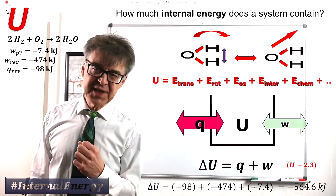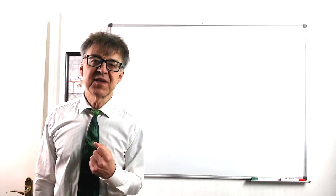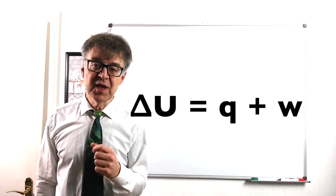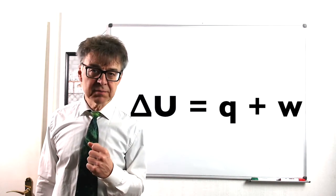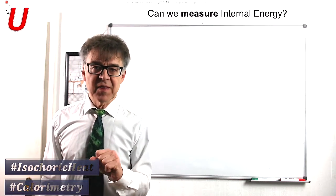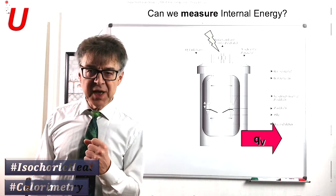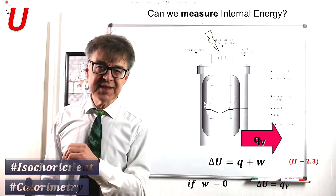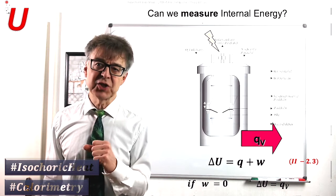Calculating delta u is particularly easy if the work is zero. And this is the case if the volume remains constant in a spontaneous process. Constant volume means no pressure volume work. The heat q sub v released in an isochoric spontaneous process is identical to the change in internal energy delta u.